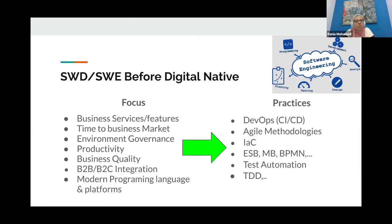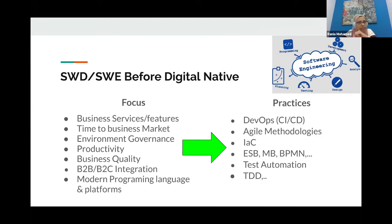Test automation was also introduced for quality and regression testing — validating that when we add more features, we're not breaking anything. Aspects related to modern software development like test-driven development and pair programming were also defined in order to help in really delivering such focuses.